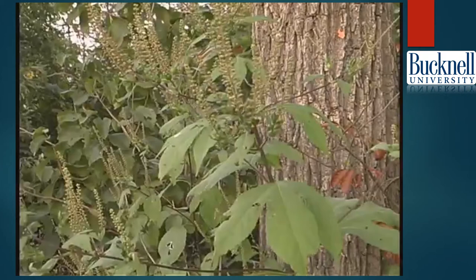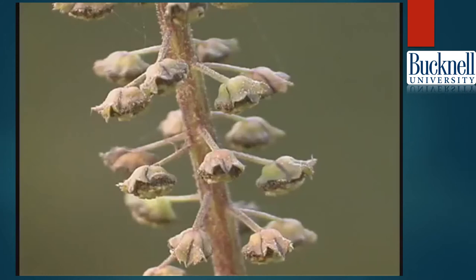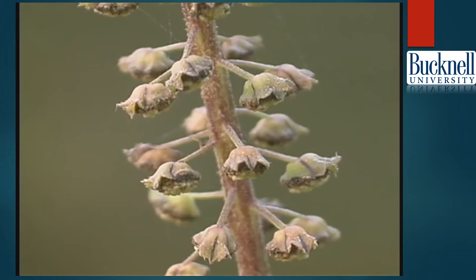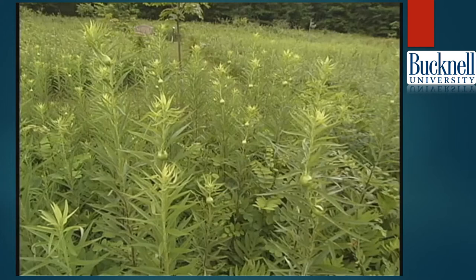The timing of goldenrod's brilliant blooms corresponds with that of a less conspicuous wind-pollinated flower called ragweed. Ragweed's dull green flowers release copious amounts of lightweight pollen to the air. The airborne ragweed pollen triggers allergic reactions in many people while its source remains obscure. Unfortunately, the late summer sufferings of many people are wrongly blamed on the goldenrod.